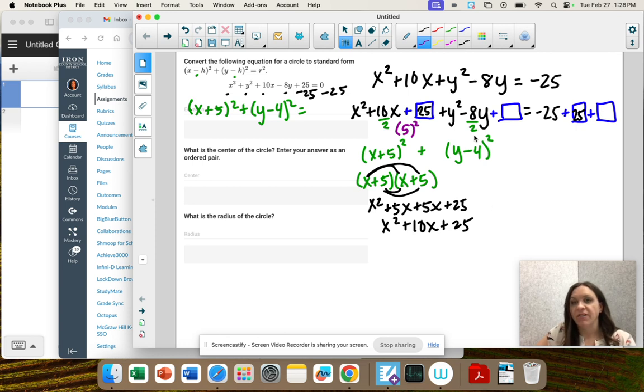So here, if I take negative 8 divided by 2, I get negative 4. And if I square that, I get positive 16. So I'm going to add 16 on both sides.